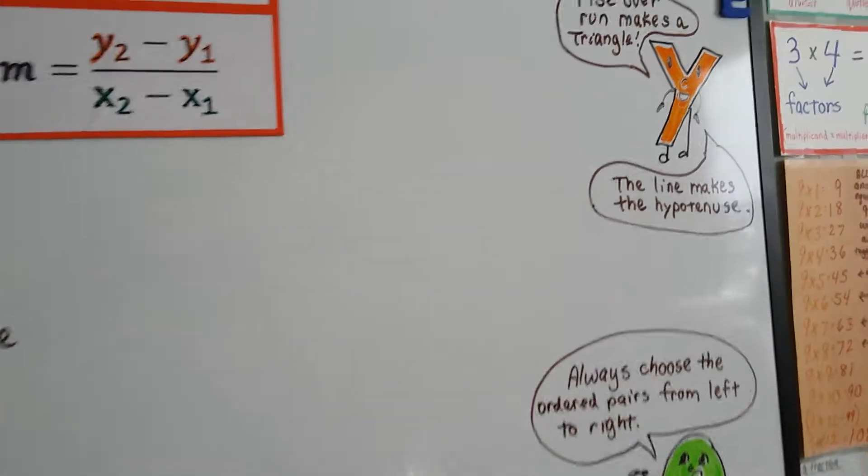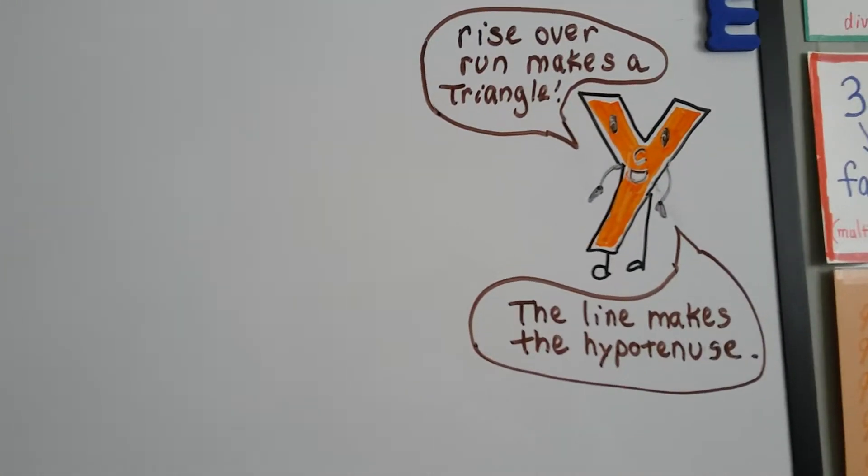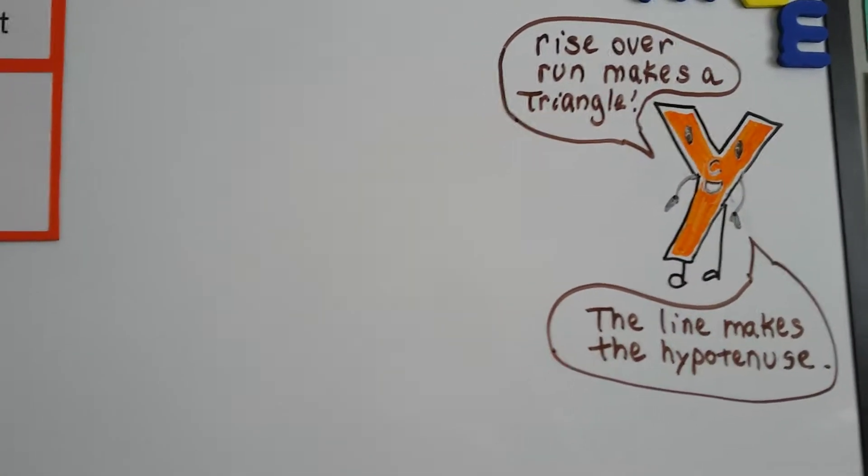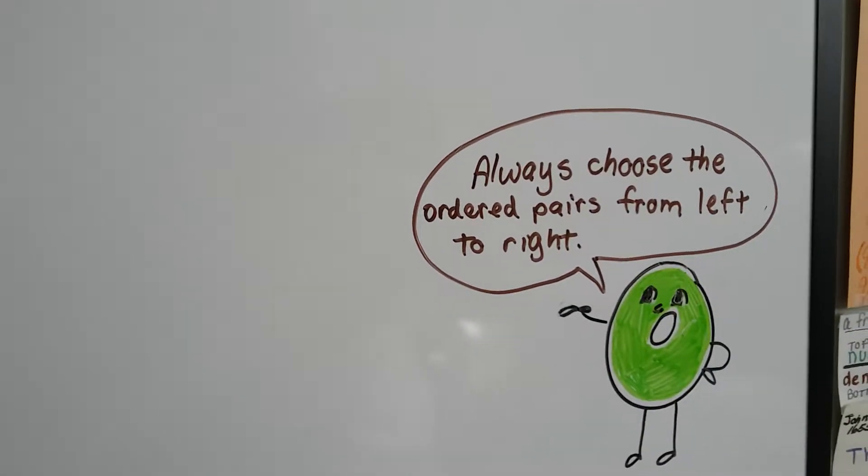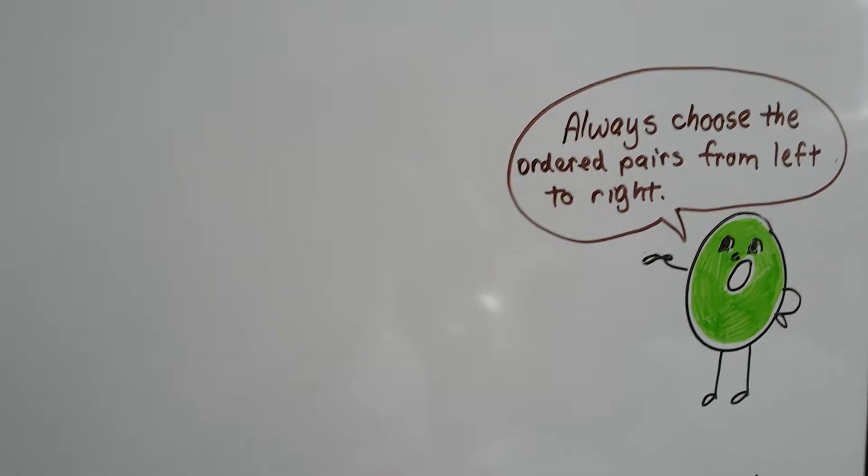And remember, the rise over the run makes a triangle, and the line makes the hypotenuse of the triangle. We should always choose our ordered pairs from left to right for the x1, y1, x2, y2.